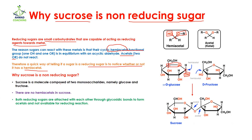Coming towards sucrose — sucrose is a molecule which is made up of two monosaccharides, which are glucose and fructose. Here we know this is glucose and this is fructose. Both of these sugars are reducing sugars because they have hemiacetal groups, but sucrose has no hemiacetal groups. When these two sugars combine with each other, their –OH groups are going to make a bond with each other.